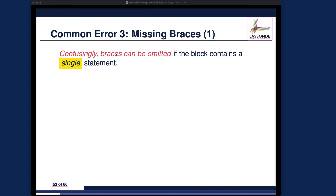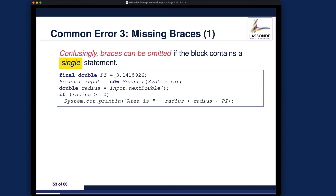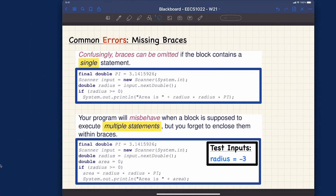Confusingly, curly braces can be omitted if the block for the branching contains only one single statement. To illustrate, let's use the simplest example: circle area calculation. We say if the input radius read in is larger than or equal to zero, then we print out the area. We put the expression of calculation directly into the print statement, which is fine — you can think of it as a numerical expression concatenated with a string.